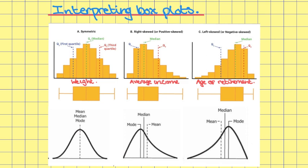If you look at the box plots associated with these three distributions, for a symmetric distribution the box is right in the middle, the maximum and minimum points tend to be the same distance from the box, so the two whiskers are generally the same length, and the median tends to be right in the middle of the box. For right skewed data, the box is towards the left-hand side, there is a long right-hand whisker, the left-hand whisker is a lot shorter, and the median tends to be towards the left-hand side of the box.